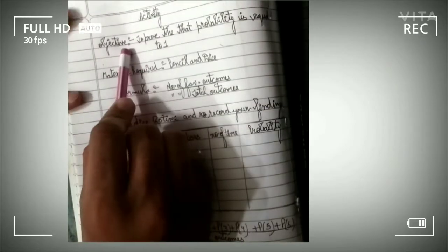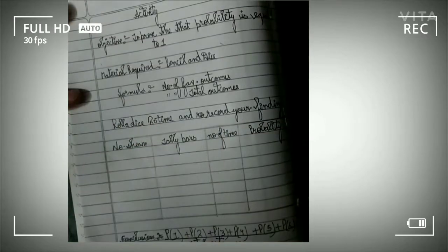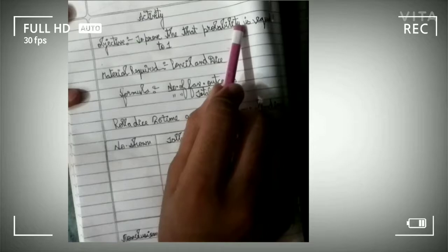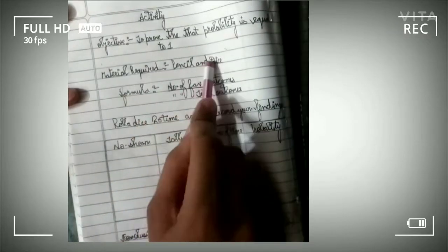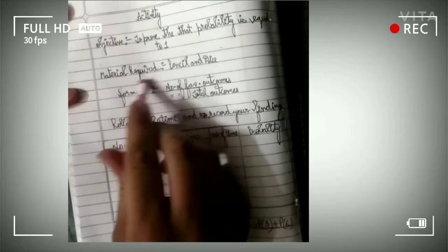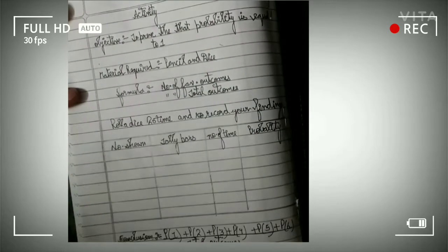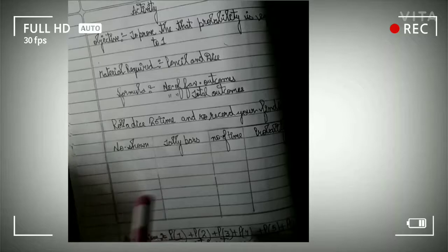First comes our objective, what we are going to prove in this experiment. Our objective is to prove that a probability is equal to 1. After that, material required for this experiment. After that, it comes our formula, how we prove it. And this is the formula of probability: number of favorable outcomes upon number of total outcomes.